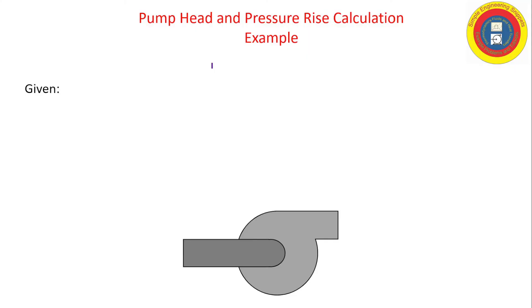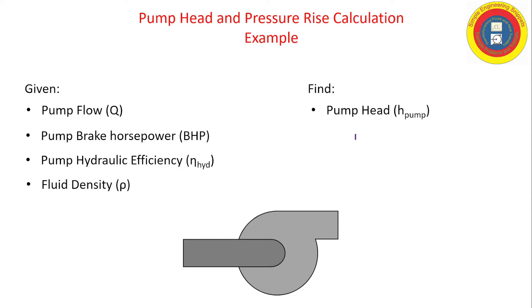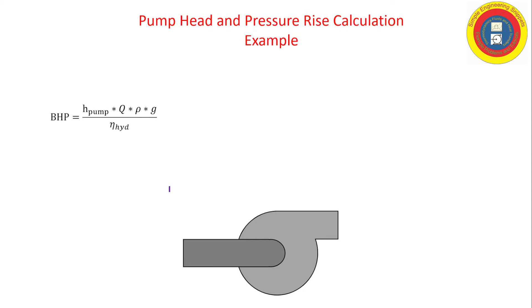Okay, so we're given a pump flow rate, brake horsepower, hydraulic efficiency, and the fluid density. We are going to determine the pump head and also the pressure rise across the pump. We're going to be doing this for water with a specific gravity equal to one, and again repeating the calculations for gasoline with a specific gravity equal to 0.68.